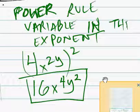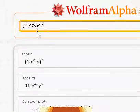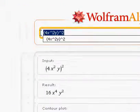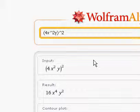16x to the fourth, y to the second. And Wolfram Alpha agrees with that. Let's take a look at what it generates.